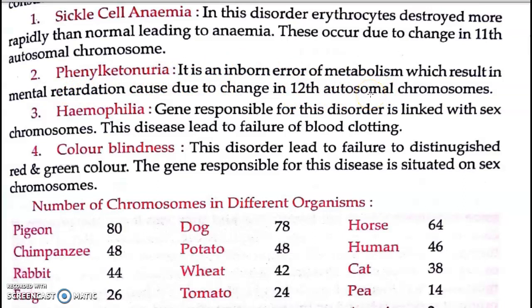The problem is in the 12th autosomal chromosome. The changes cause brain or nerve damage, leading to mental retardation. Basically, in phenylketonuria, the amino acid phenylalanine is not metabolized properly. When metabolism is not working correctly, phenylalanine builds up in the body to a very high level, and this excess phenylalanine causes mental retardation.